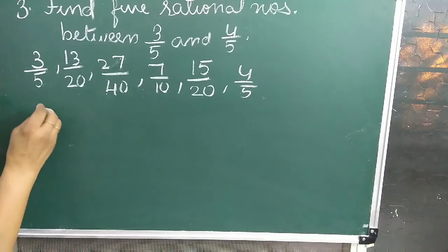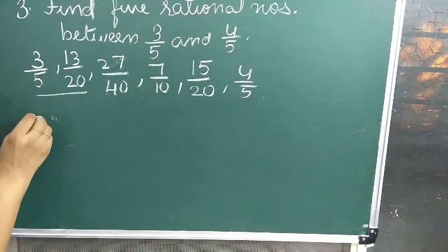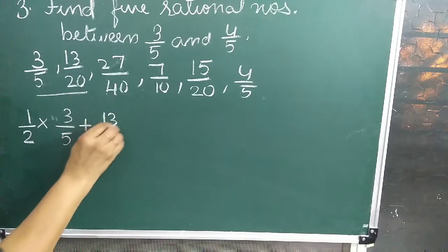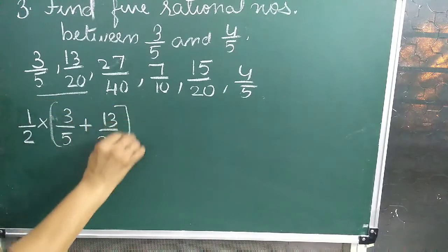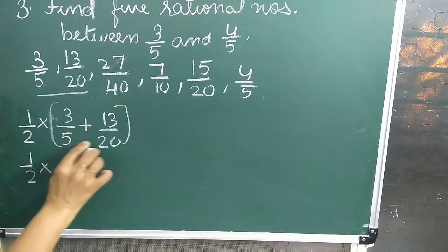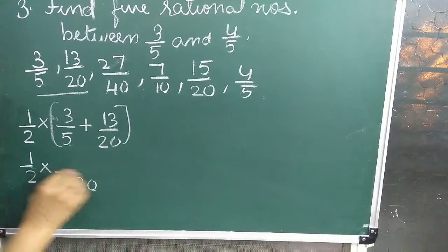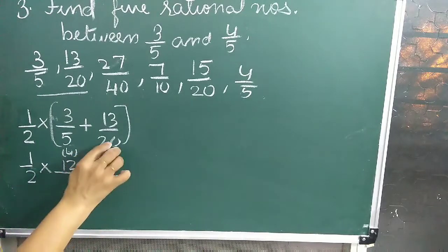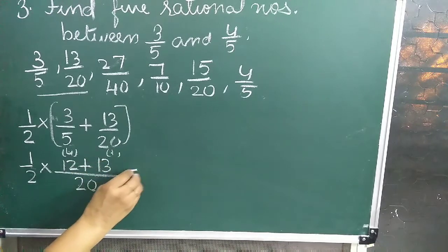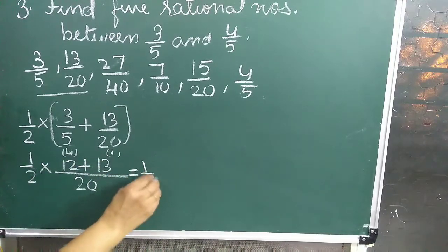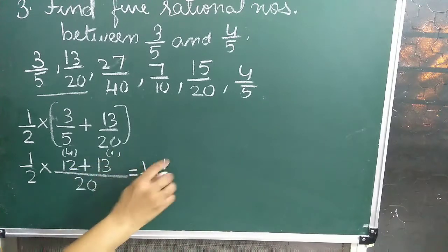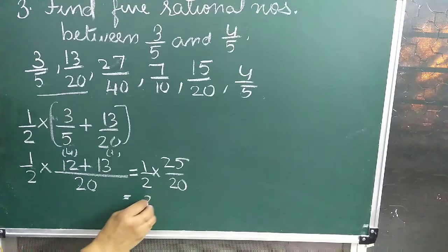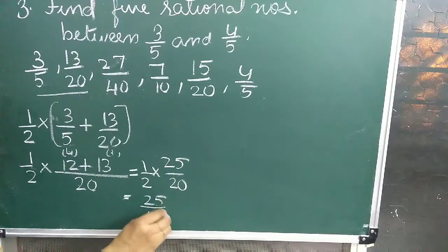For the 5th number, we consider the first two numbers: 1 upon 2 into (3 upon 5 plus 13 upon 20). LCM of 5 and 20 is 20; 20 divided by 5 is 4, and 4 threes are 12; plus 20 divided by 20 is 1, and 1 into 13 is 13. That is 1 upon 2 into 25 upon 20, which equals 25 upon 40.